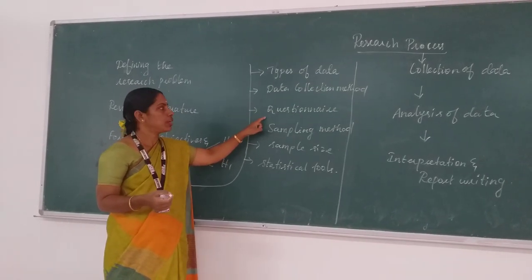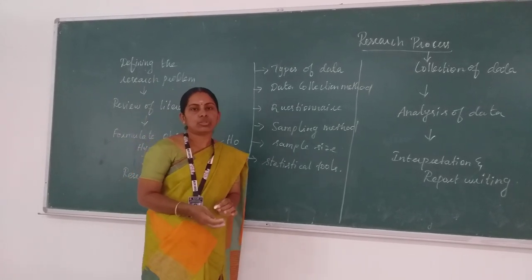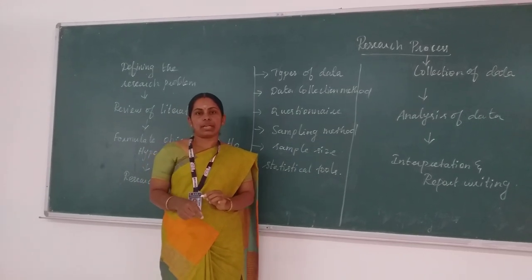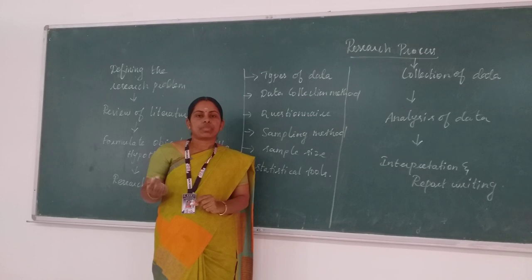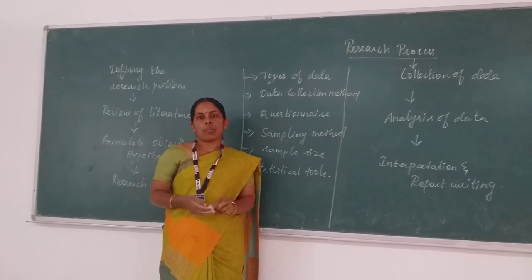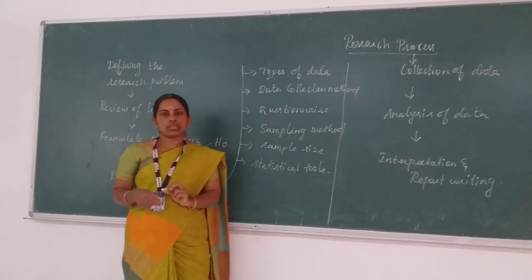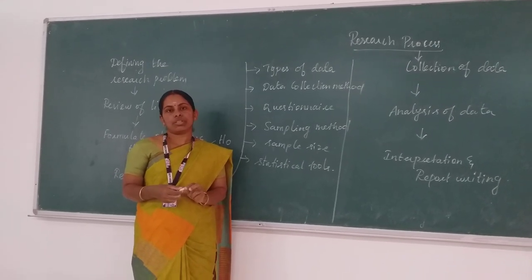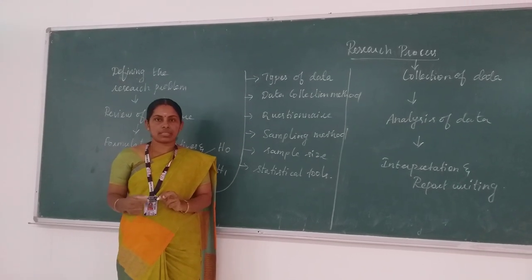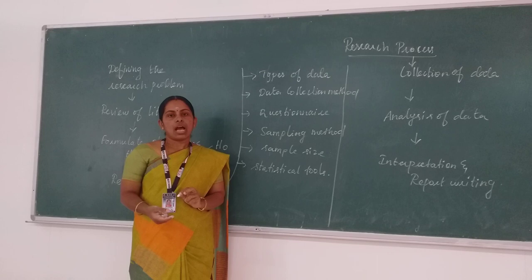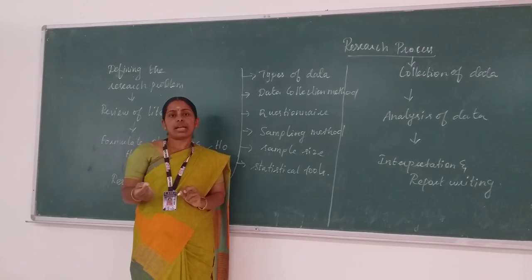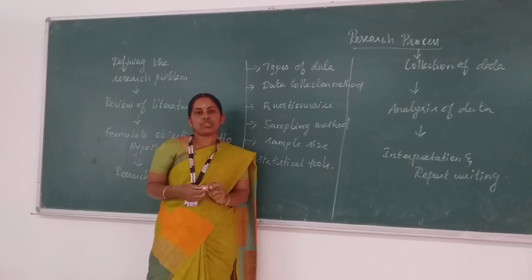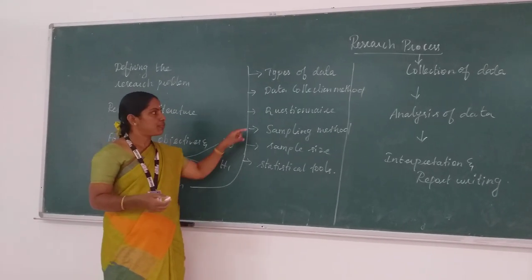After choosing the data collection method, we go to framing our questionnaire. The questionnaire has two parts. Part one includes questions related to the personal profile of the respondent. Part two includes questions related to our research topic. After framing the questionnaire, the researcher conducts a pilot study to test the reliability of the questionnaire. After collecting data for the pilot study, the researcher enters the data into a data sheet and uses the statistical tool Cronbach's alpha test. A Cronbach's alpha value of 0.9 means our questionnaire is highly reliable.